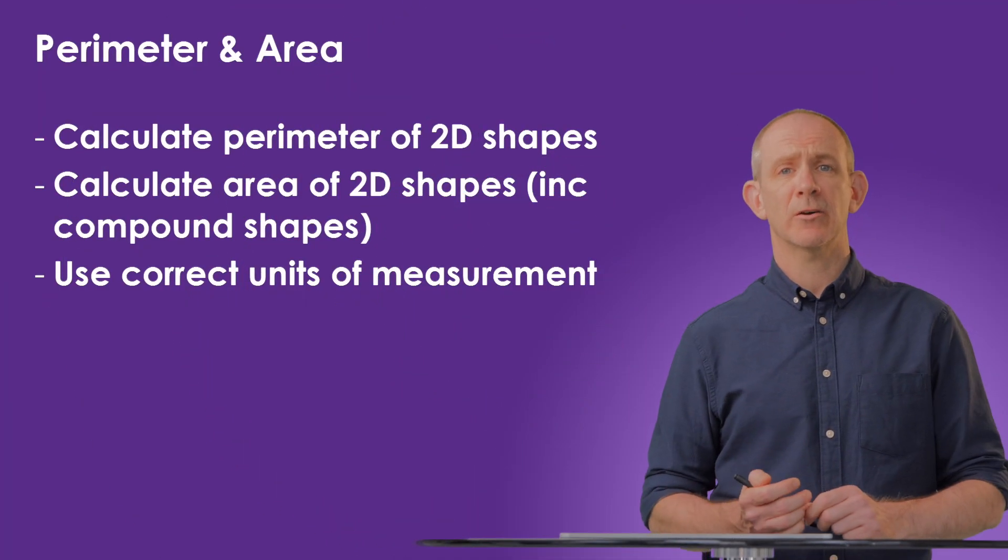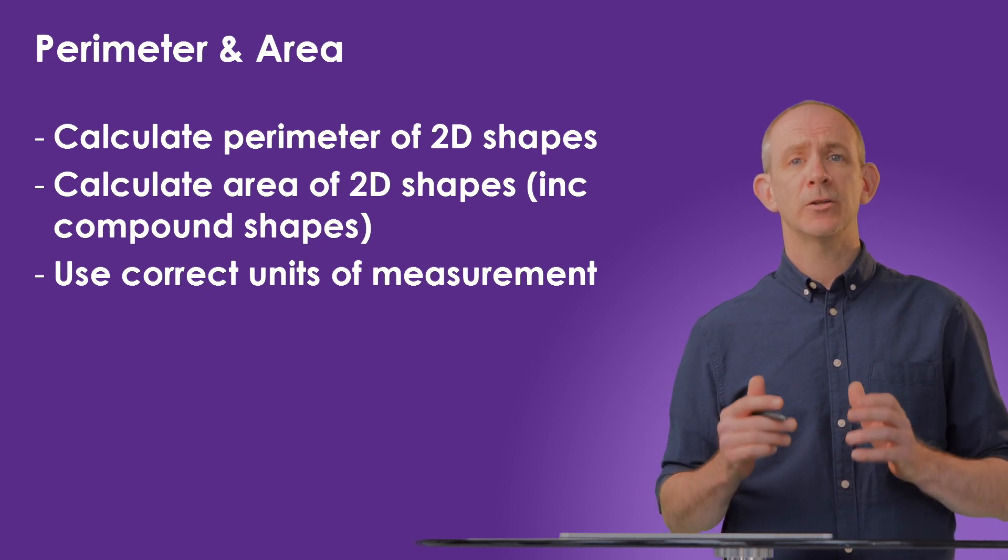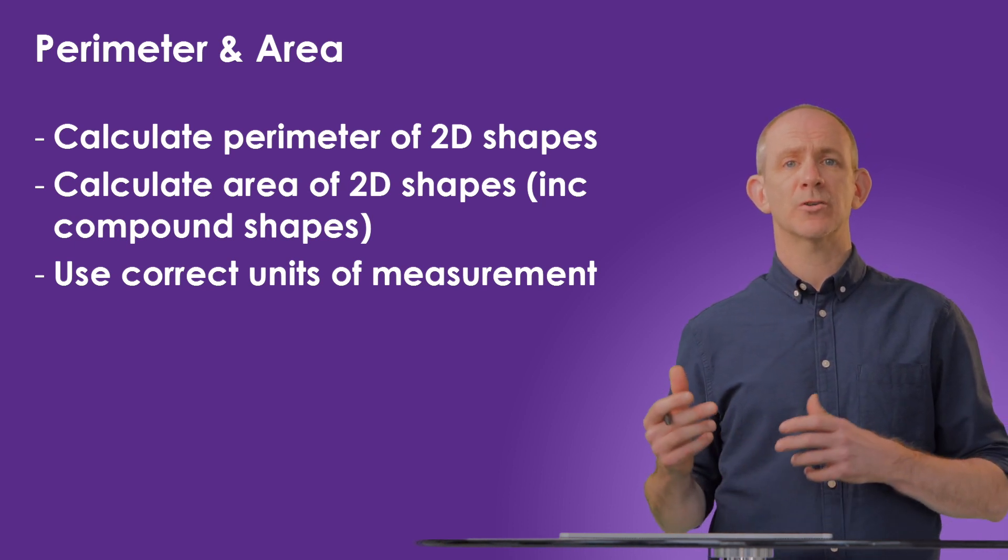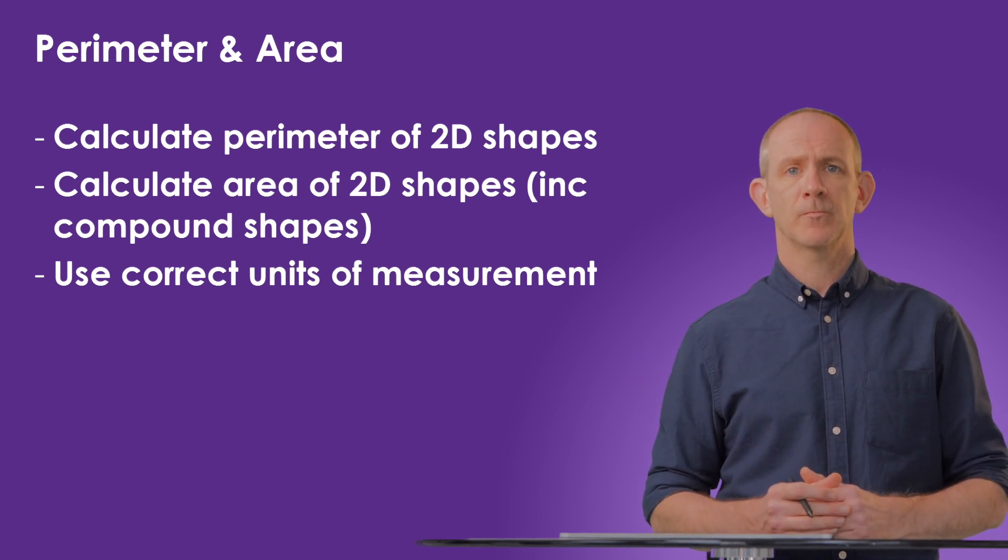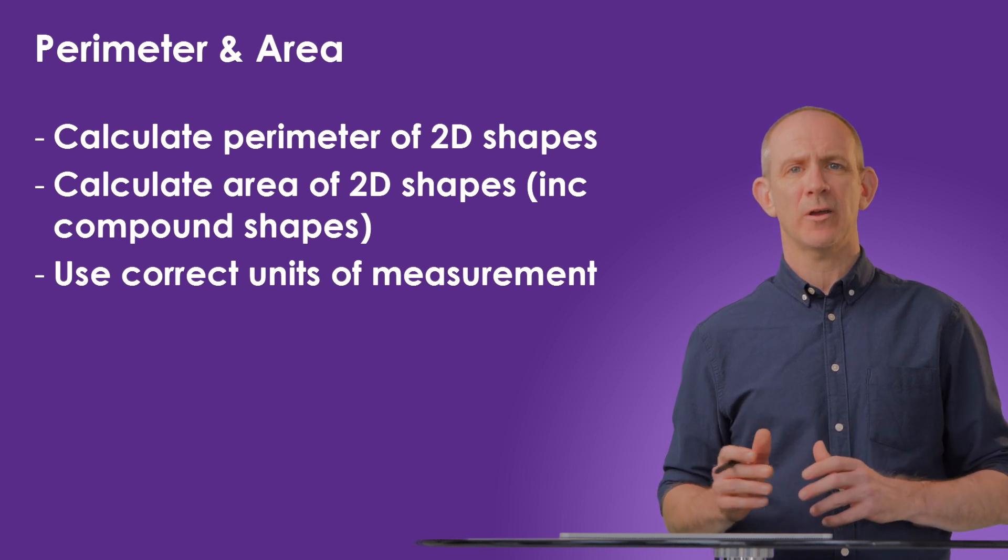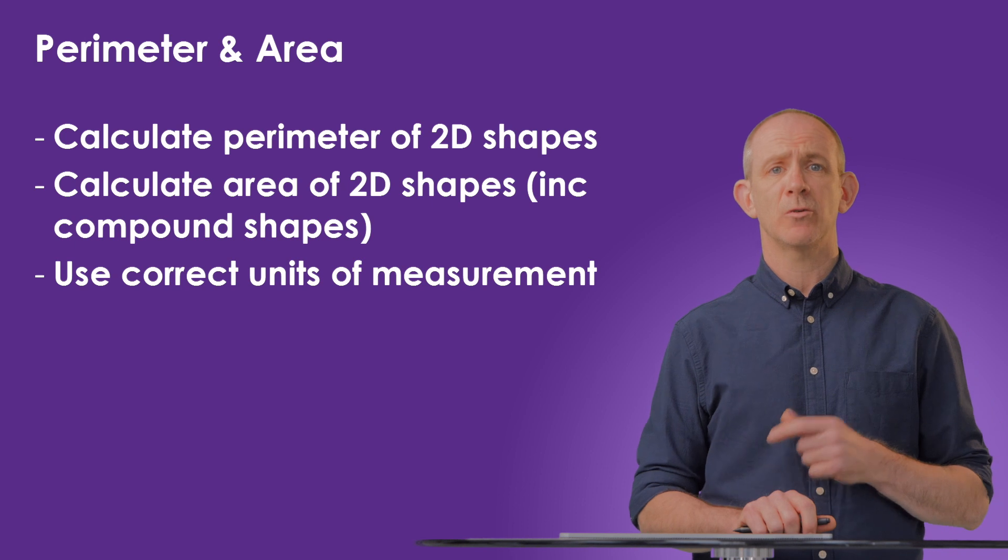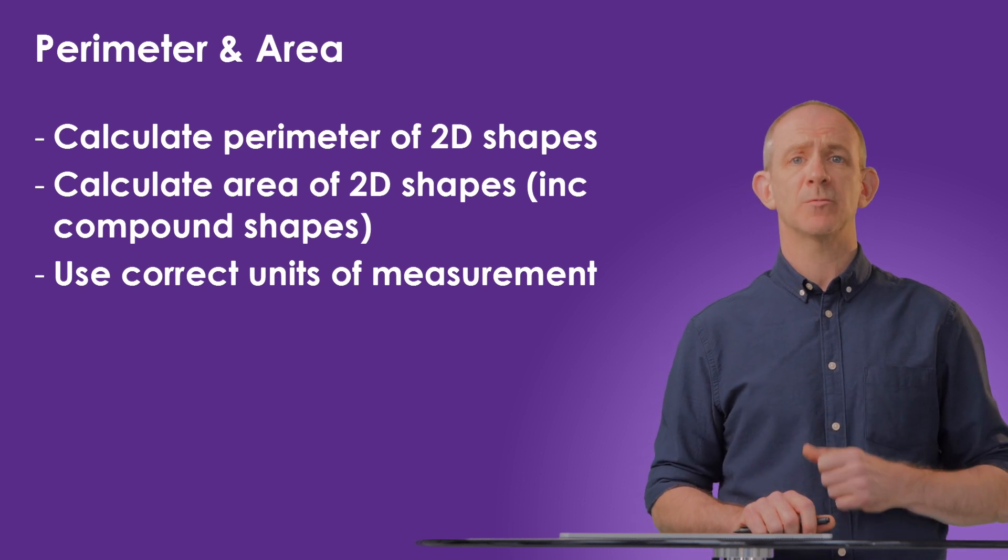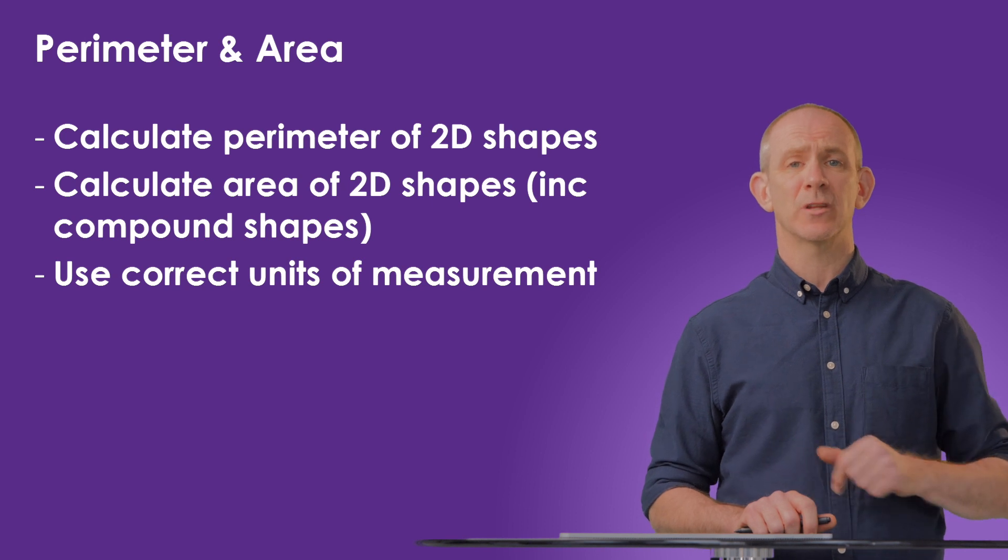In this video we'll be looking at calculating the area and the perimeter of two-dimensional shapes, including compound shapes which are where a shape is constructed by more than one recognizable polygon. We'll also be looking at using the correct units of measurement for both area and perimeter. Before watching this video, I recommend that you watch the video on polygons and measurements and conversions, as that's referenced several times during this video.